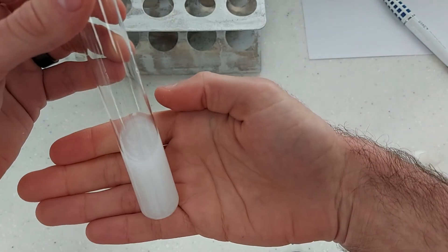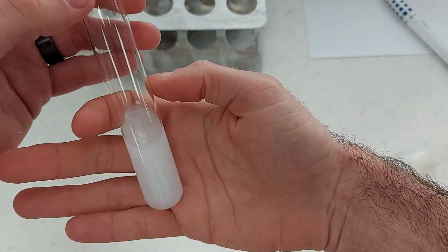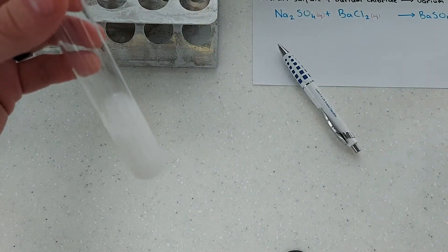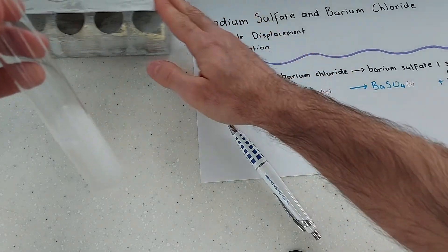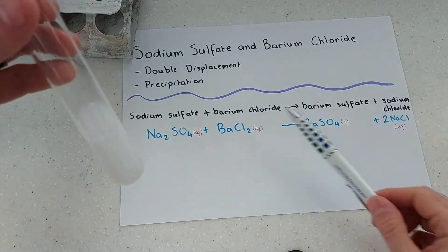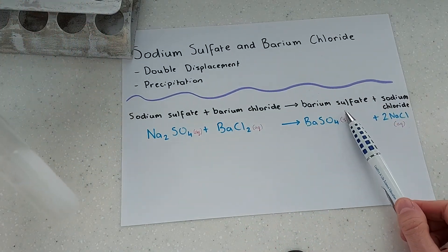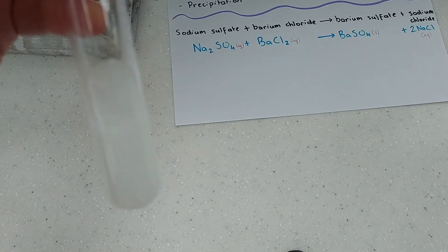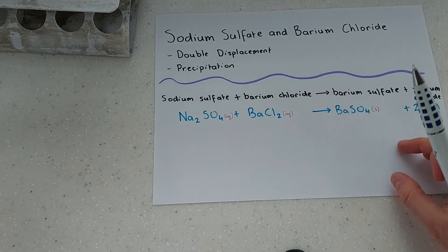Now that cloudiness that you can see is actually the barium sulfate that I've produced as a precipitate. So let's see if I can focus on the test tube itself. There we go. And so that is an example of a double displacement reaction between sodium sulfate and barium chloride.